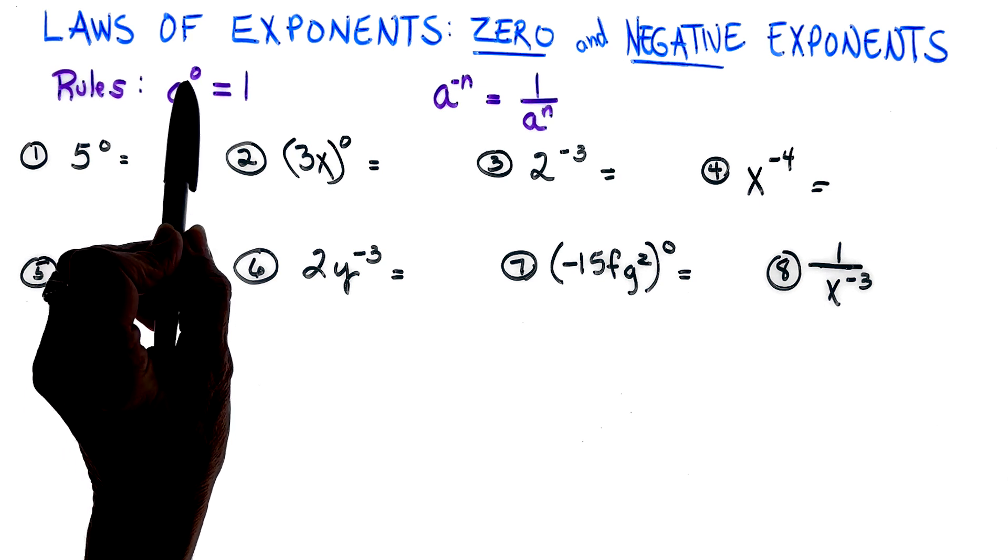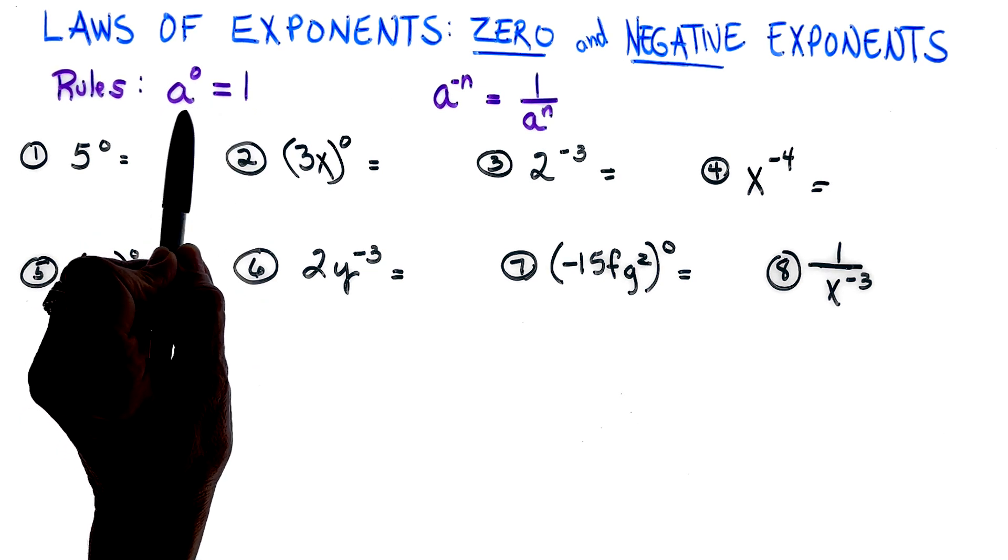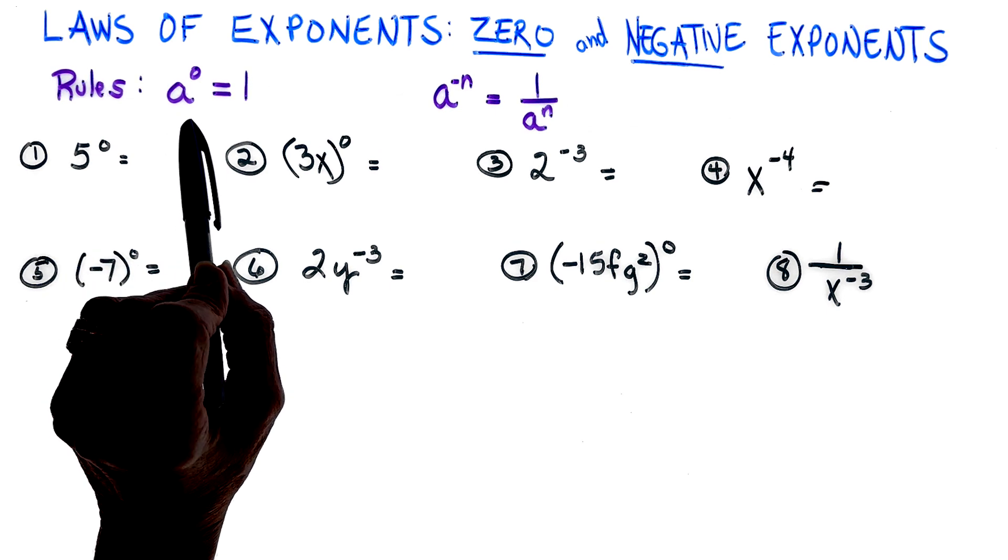Any variable to the zero power is equal to one. Actually, any base—it could be a number, could be positive or negative—it doesn't matter.